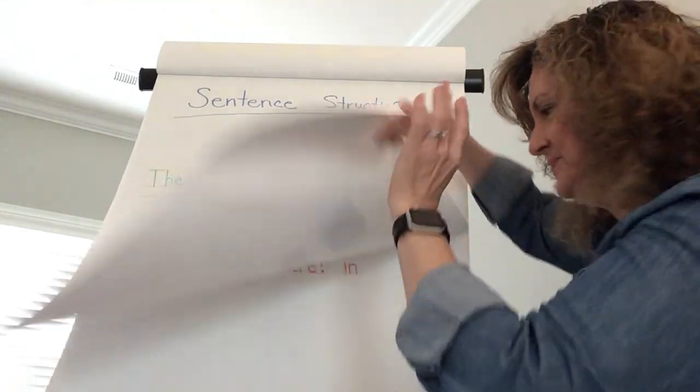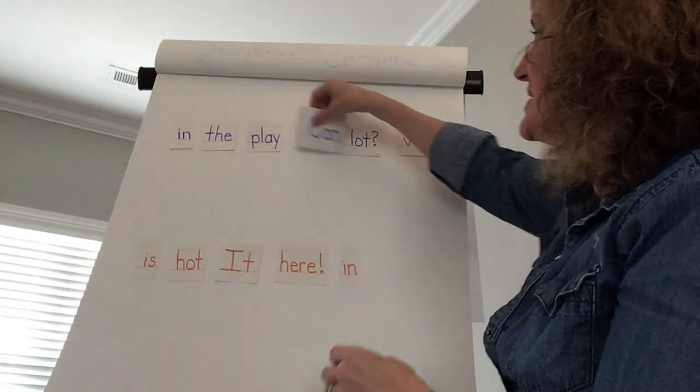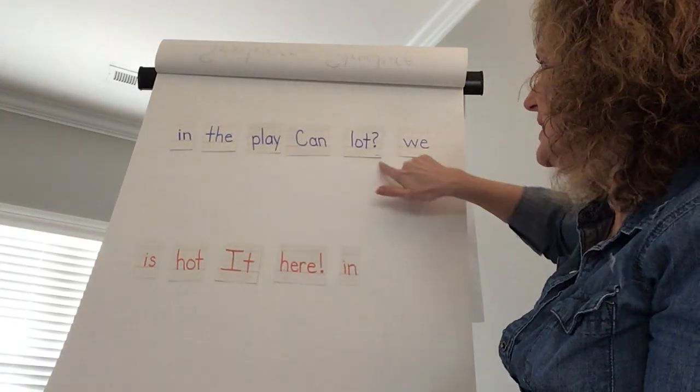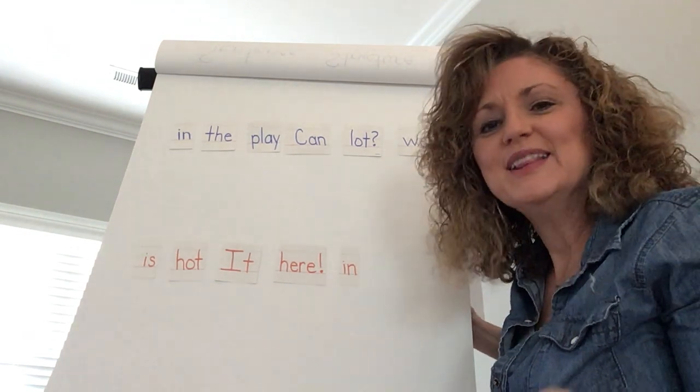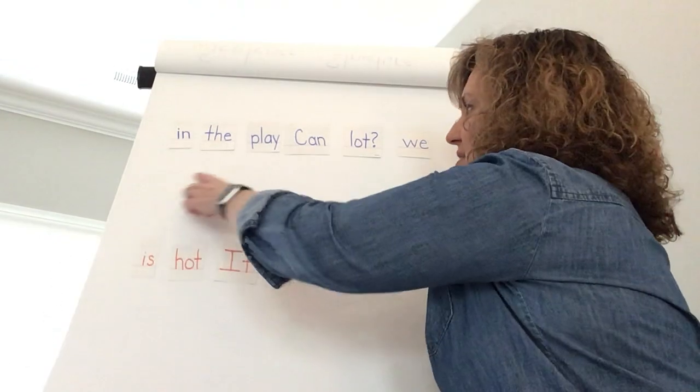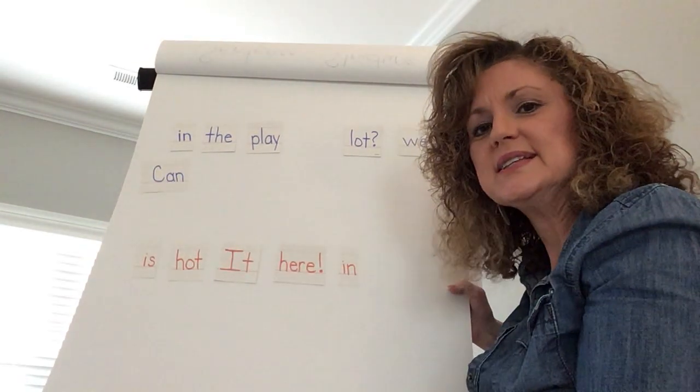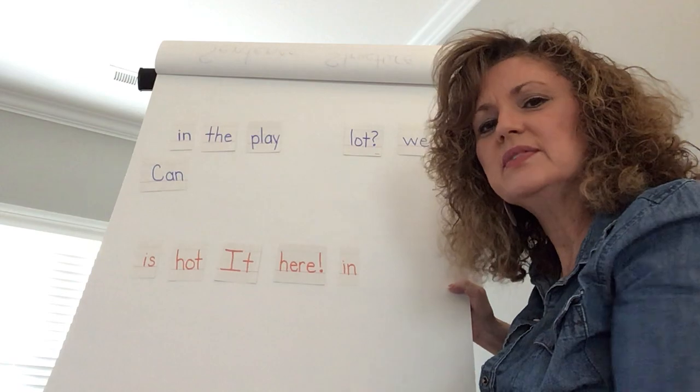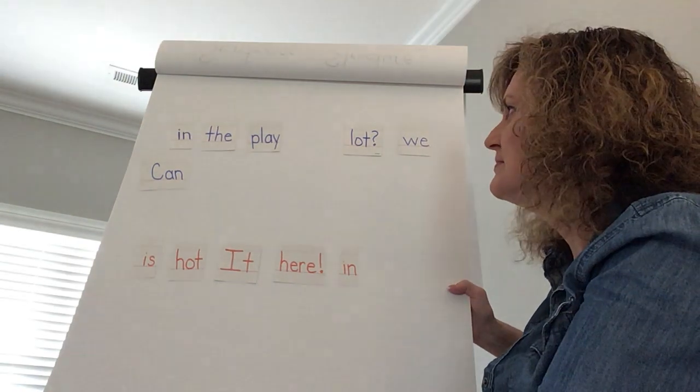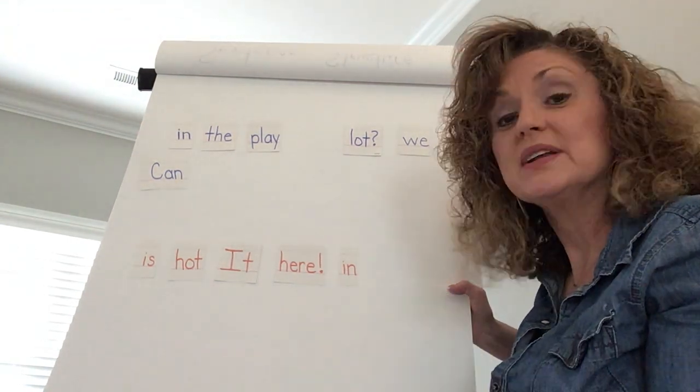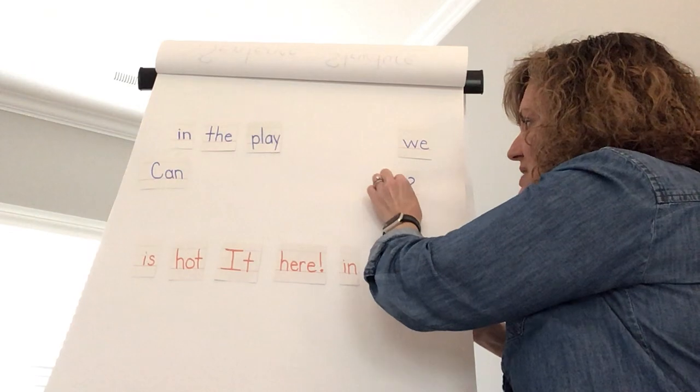I have a couple more for us to do. So my next sentence that I have up here says in the play can lot we. What do you think we should do first? That's right. Let's look for the word that has the capital letter in it. So as I look through them I can see the word can has a capital letter. So I know this is going to be the first word of my sentence. Let's look at the rest of the words and see if we can think of another clue. I don't see a period after any of the words. But one of the words has a question mark after it and I know a question mark is another form of punctuation. So the word lot is going to have to be the last word of my sentence.